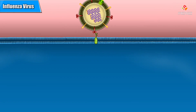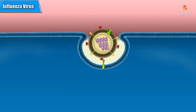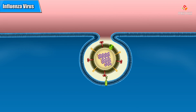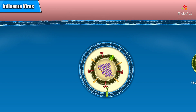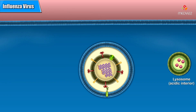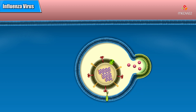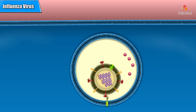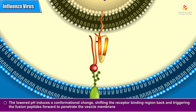The host cell takes up the virus by endocytosis. The endocytic vesicle then fuses with a lysosome, and its interior acidifies. The lowered pH induces a conformational change.